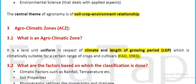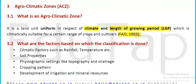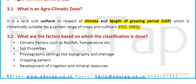What is an agro-climatic zone? It is a land unit that is uniform in respect of climate and length of growing period (LGP), which is climatically suitable for a certain range of crops and cultivars. FAO in 1983 gave the agro-climatic zone definition based on the climate of the region and the length of the growing period.